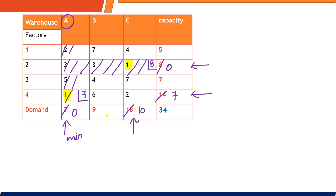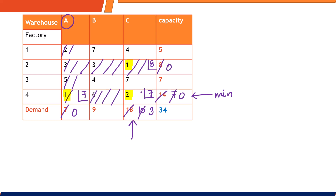Next, find the next least cost from the table — it is 2. Start allocation between the remaining demand of 10 and the remaining capacity of 7. The minimum is 7, so we allocate 7 units here. That cell's capacity becomes 0, and the demand reduces: we still need 3 more units from this destination. In total we wanted 14 units, so demand from this warehouse is not yet exhausted.